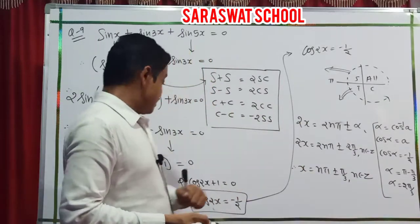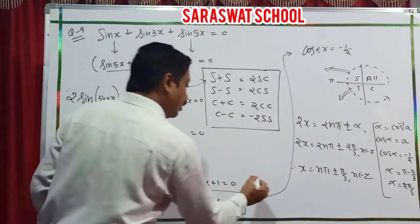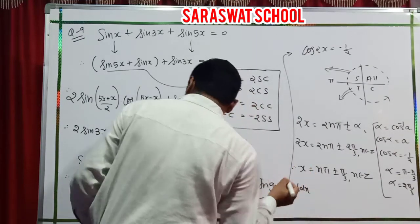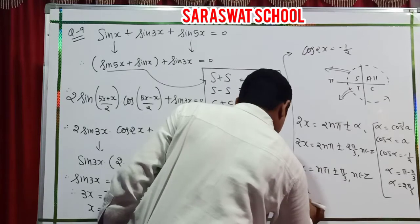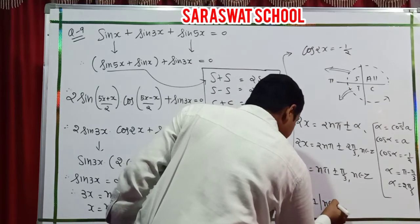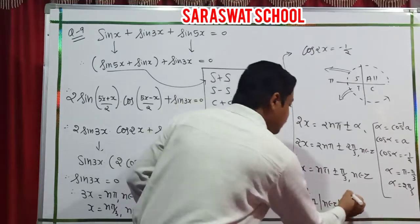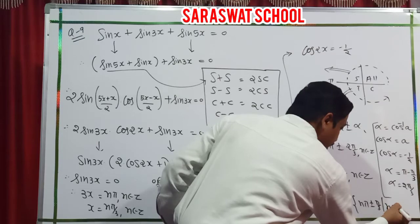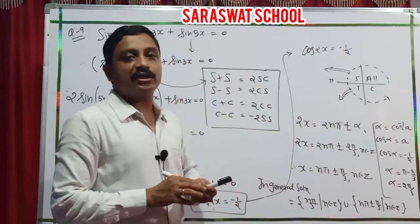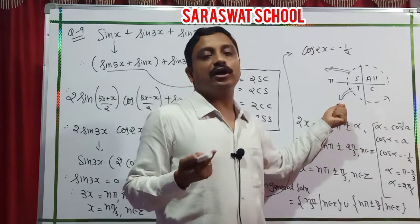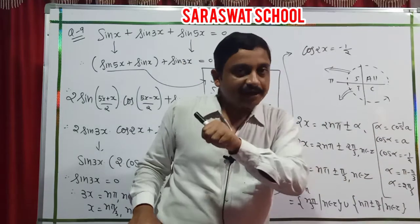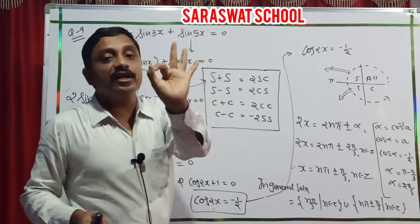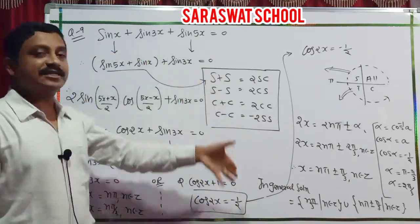Final general solution: x equals n pi by 3, n belongs to Z, union x equals n pi plus or minus pi by 3, n belongs to Z. The answer can also be written with the third quadrant angle pi plus pi by 3, but by rule write the first least angle. Exercise 3.4 is done.